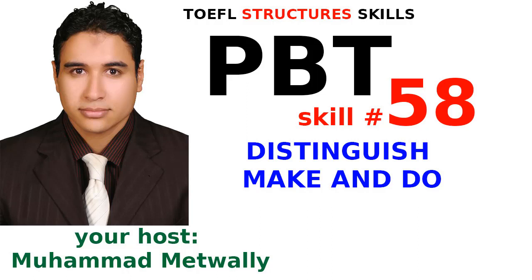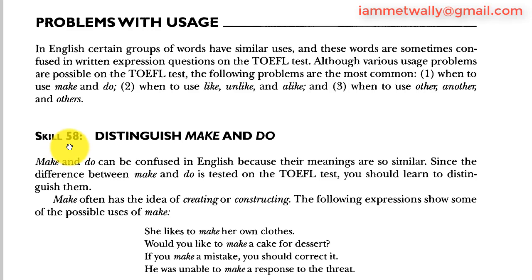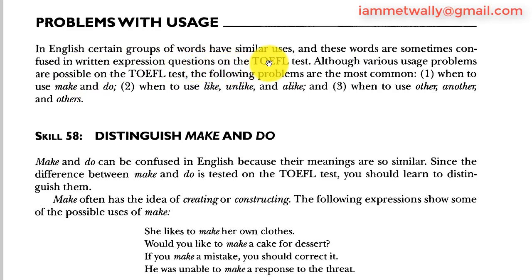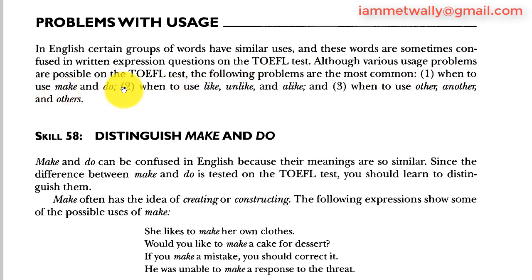Assalamu alaikum, hello everybody, it's me your host Muhammad Metwally, and today with Skill 58 of distinguishing between make and do. Before we go, we have to read this introduction about the problem with usage in English. Certain groups of words have similar uses and are sometimes confused in written expression. On the twofold test, the most common problems are: one, when to use make and do; two, when to use like, unlike, and alike; and three, when to use other, another, and others.